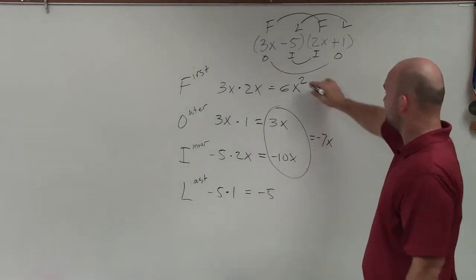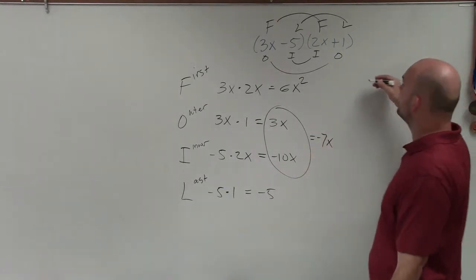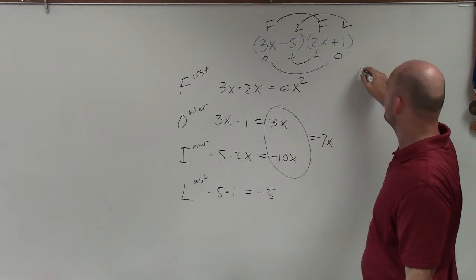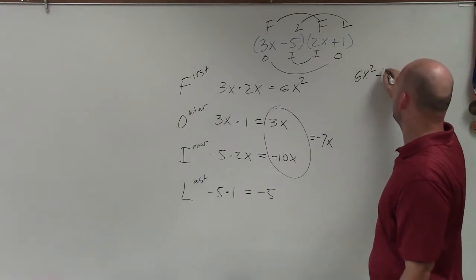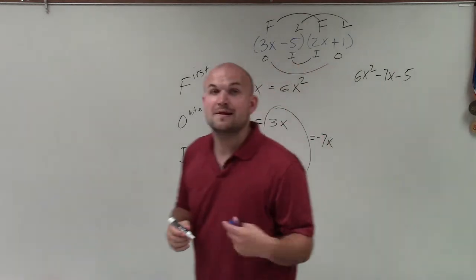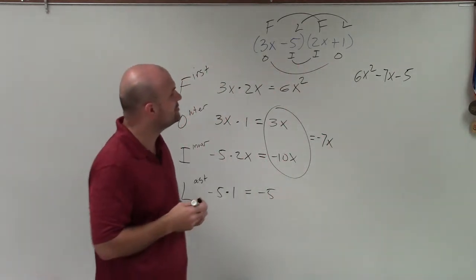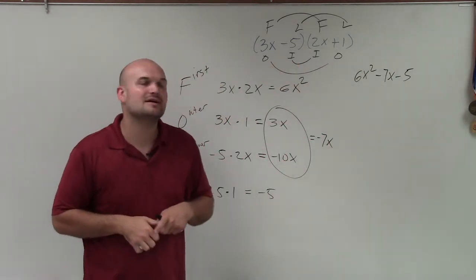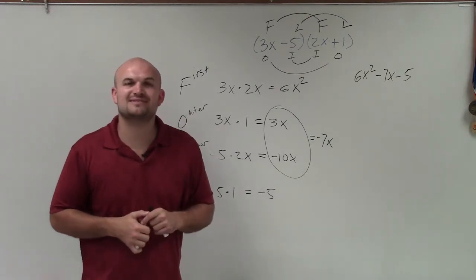So now, I'm just going to write these final answers as my trinomial, or as my product. So I have 6x squared minus 7x minus 5, or the product of my two binomials. So there you go, ladies and gentlemen. That is how you use FOIL to determine the product of two binomials. Thanks.